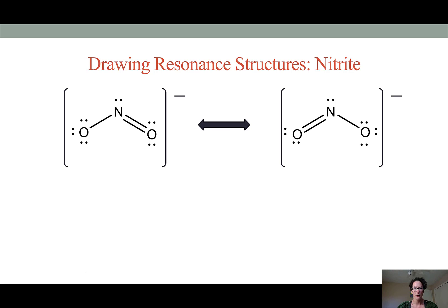The way we depict resonance structures is using this double-headed arrow to indicate that they are equivalent. Another way of depicting a resonance structure is as an average of the two structures. What we can see at the bottom is that neither oxygen has a double bond or a single bond.